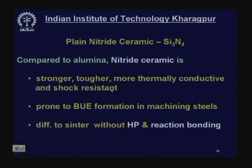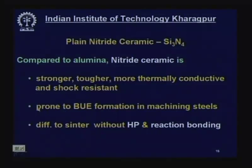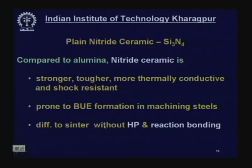Silicon nitride is much better than alumina, but it is prone to built-up edge formation in machining steels — it is partially soluble in steel, so continuous rubbing and heat generation lead to built-up edge at the interface, causing problems in machining. Additionally, silicon nitride tools are difficult to sinter — manufacturing is more difficult than alumina processing — requiring hot pressing or reaction bonding, which are costlier processes.